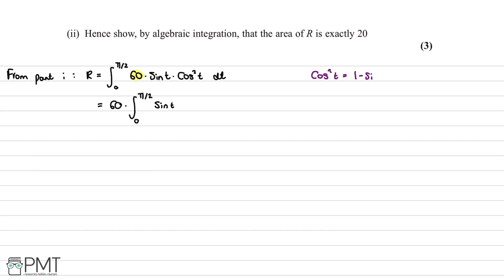We use the identity cos²(t) = 1 − sin²(t) and substitute it in. Expanding the brackets gives sin(t)(1 − sin²(t)) = sin(t) − sin³(t), integrating with respect to t.